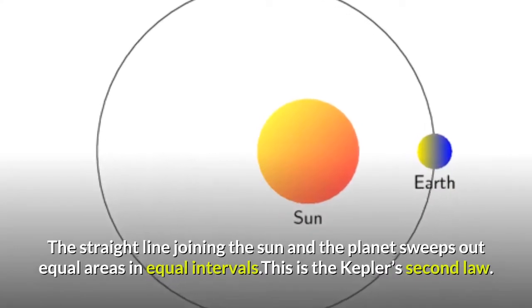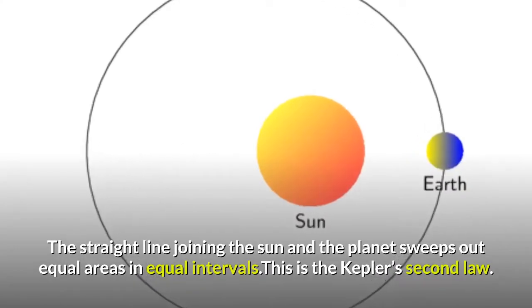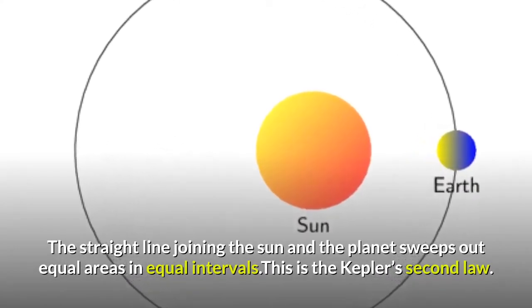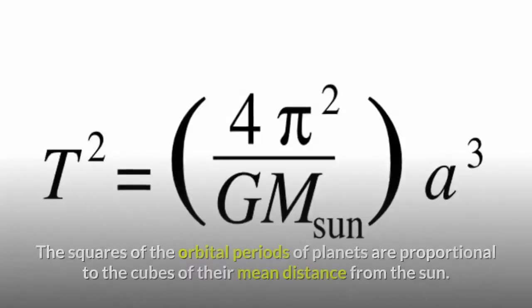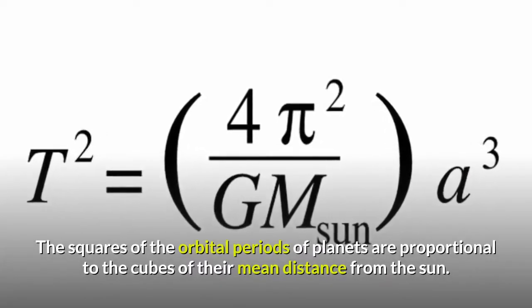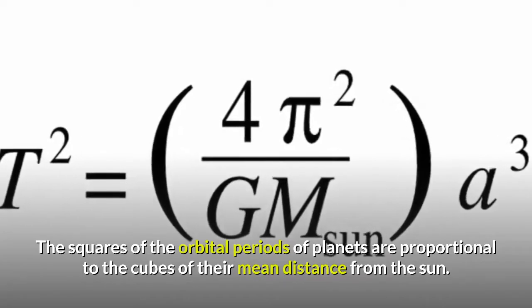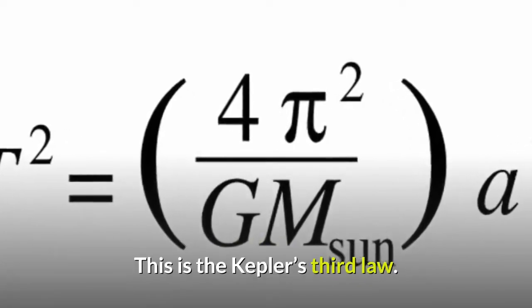Kepler's second law states that the straight line joining the sun and the planet sweeps out equal areas in equal intervals. The third law states that the squares of the orbital periods of planets are proportional to the cubes of their mean distance from the sun.